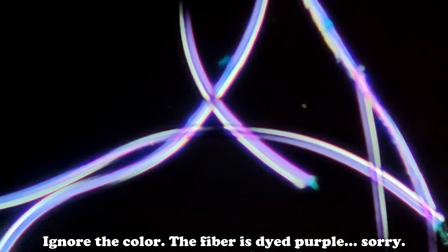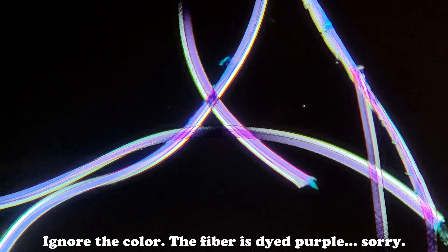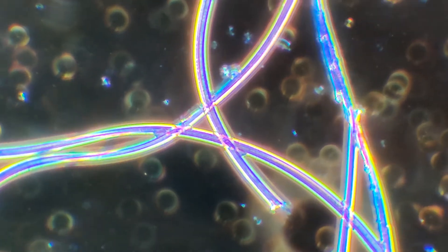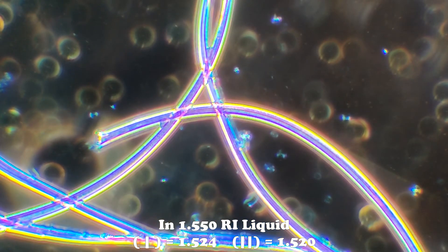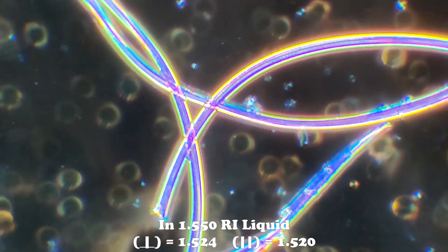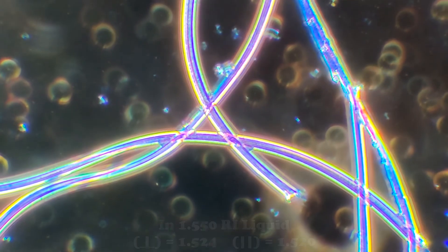Under cross-polarization, Orlon exhibits a low but uniform birefringence. Under dispersion staining in 1-5-5 refractive index liquid, you'll find that Orlon has a very uniform dispersion staining color, regardless of orientation.